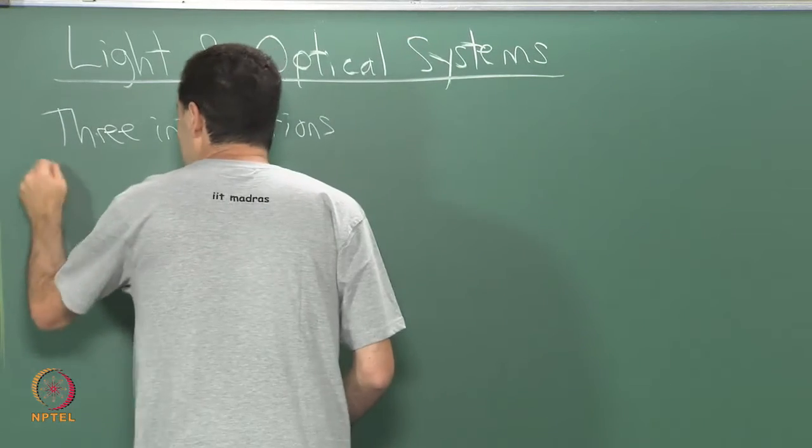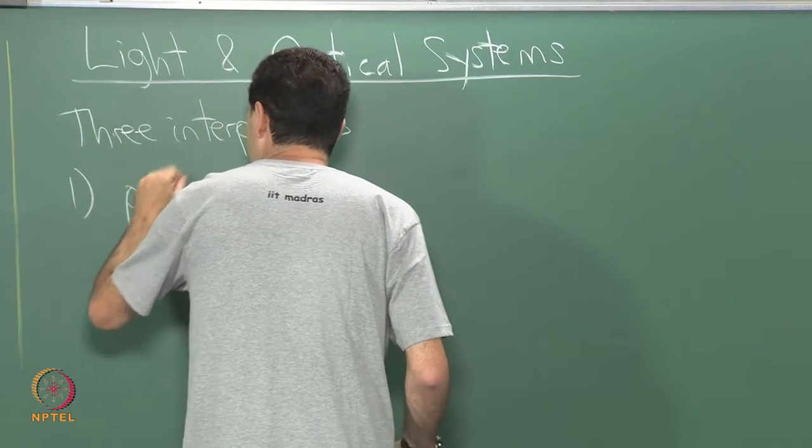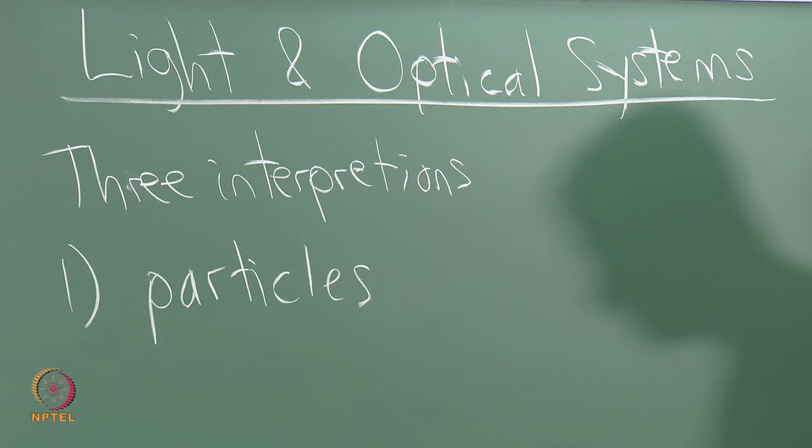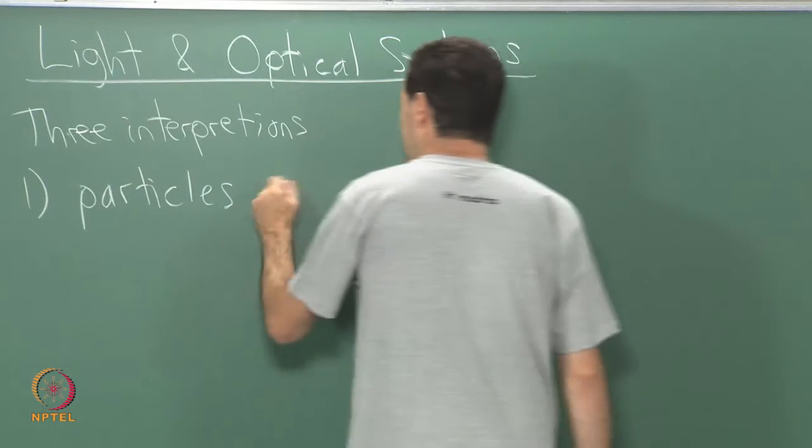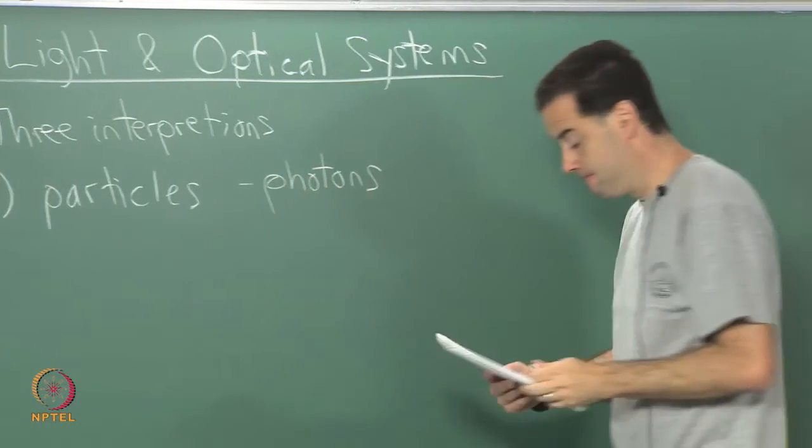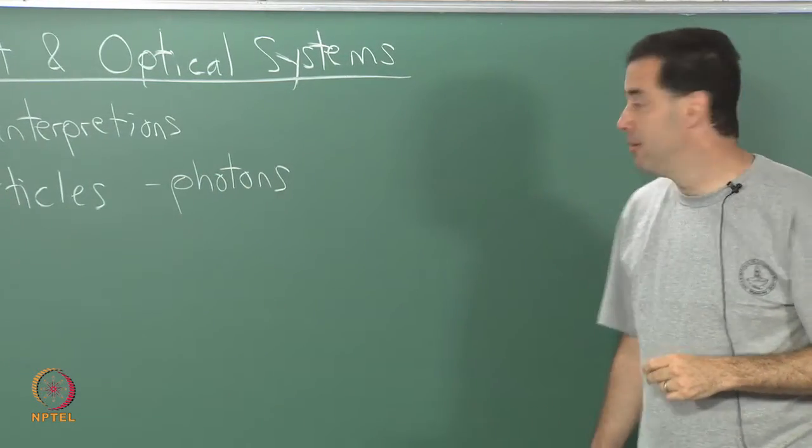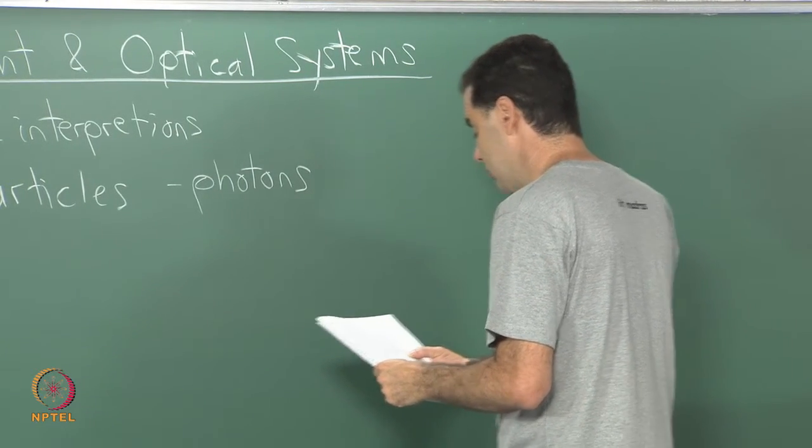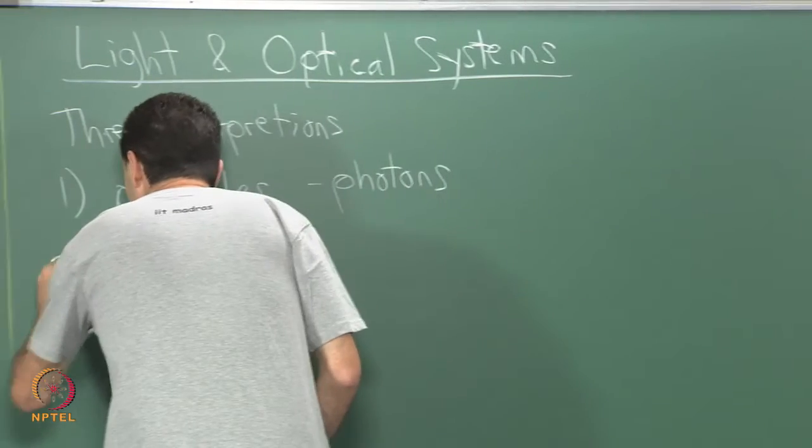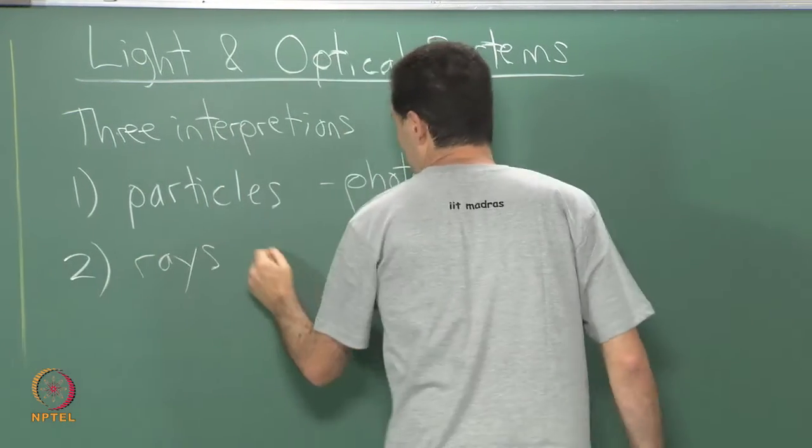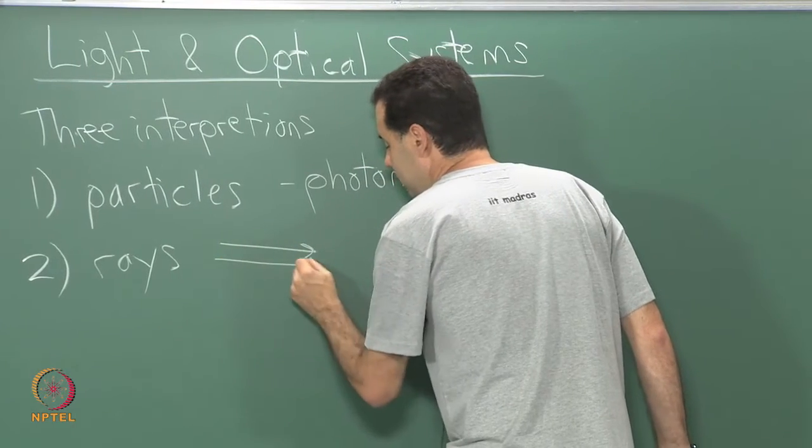Three interpretations: one is light as particles, in other words as photons. Two more representations - one of them is light as rays.